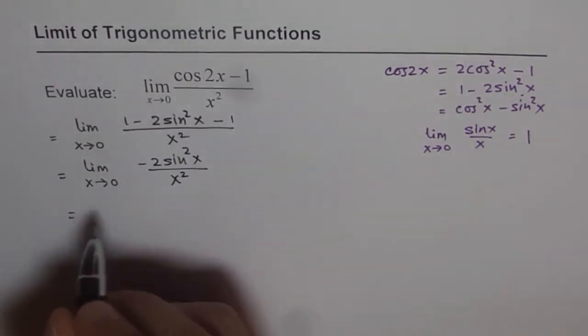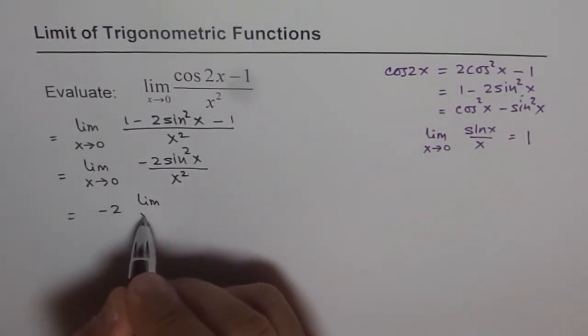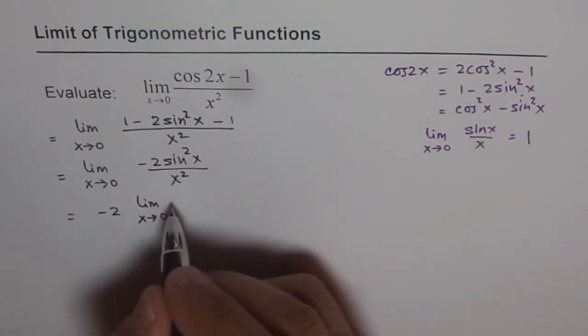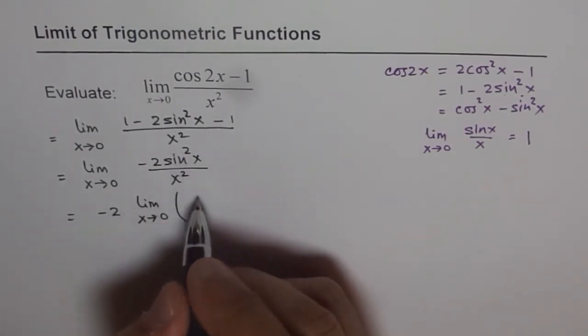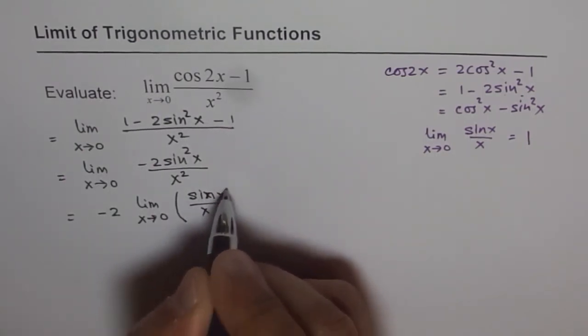Now I can write this minus 2 as a constant. Let me bring it outside. And we say limit x approaching 0. And what do we have here? We have sin x over x whole square.